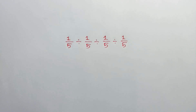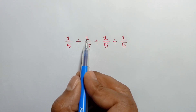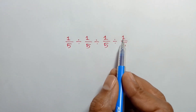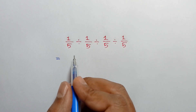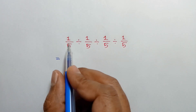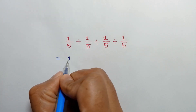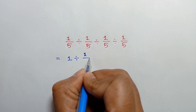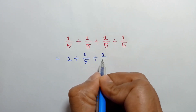Hi everyone. In this video I am going to show how to simplify 1 over 5 divided by 1 over 5 divided by 1 over 5. According to order of operations, we can write 1 over 5 divided by 1 over 5, divided by 1 over 5.